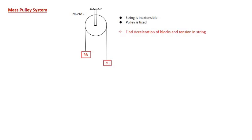Welcome. Today we are going to study the mass-pulley system, which is a continuation of Newton's laws of motion. The question is: there is a pulley with two masses m1 and m2, where m1 is greater than m2, connected by an inextensible string and the pulley is fixed. We have to find the acceleration of the blocks and the tension in the string, and we will solve this using Newton's laws of motion.